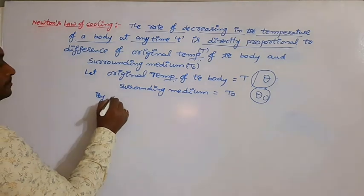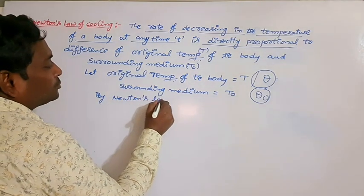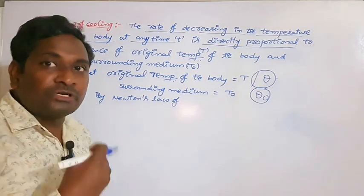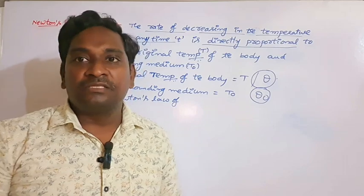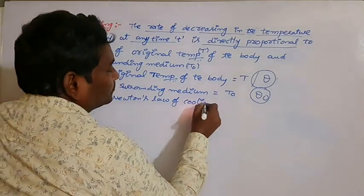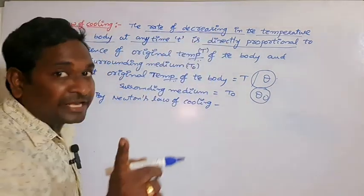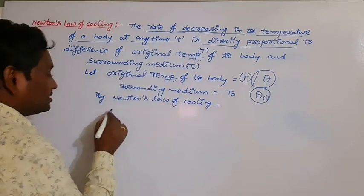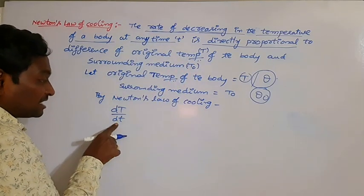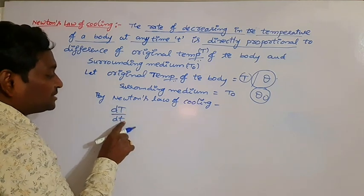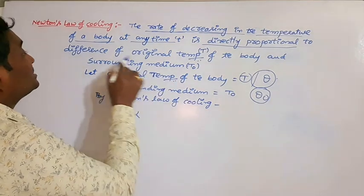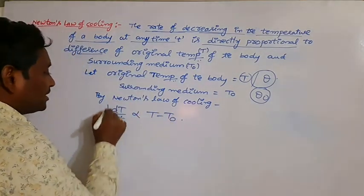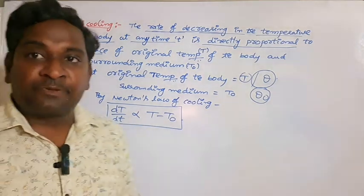So, according to Newton's law of cooling, the rate of decreasing in temperature with respect to time t — that is dT/dt — is proportional to the difference of the temperature of the body and the surrounding medium, which is T minus T0. This is the mathematical expression for Newton's law of cooling.